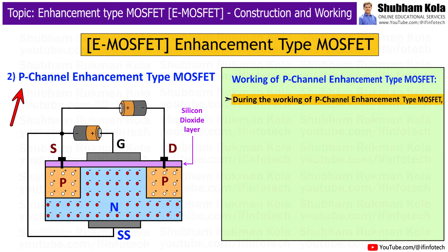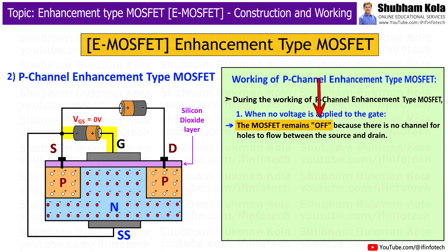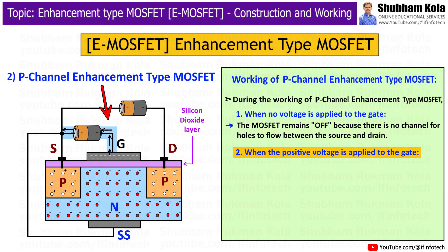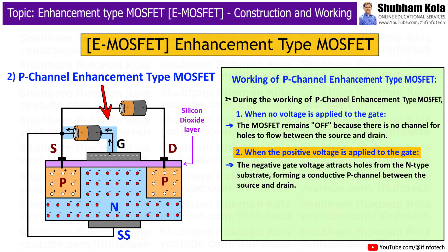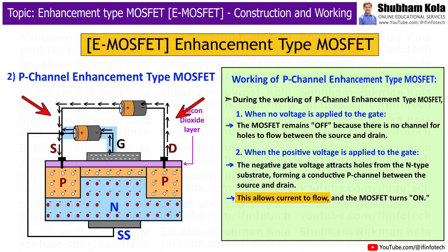During the working of a P-channel enhancement type MOSFET, when no voltage is applied to the gate, the MOSFET remains off because there is no channel for holes to flow between the source and drain. But when a negative voltage is applied to the gate, the negative gate voltage attracts holes from the N-type substrate, forming a conductive P-channel between the source and drain. This allows current to flow, and the MOSFET turns on.